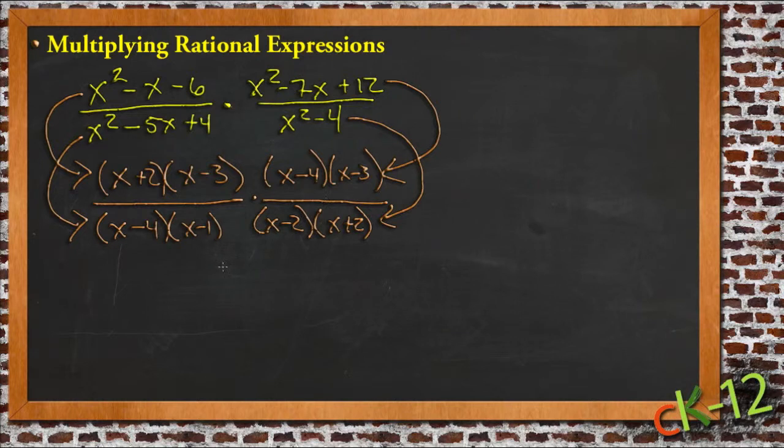Now we have everything factored out. We just cancel the things that match. So we have one here and a matching one here. And we have an x minus 4 here and an x minus 4 here. And that's it.